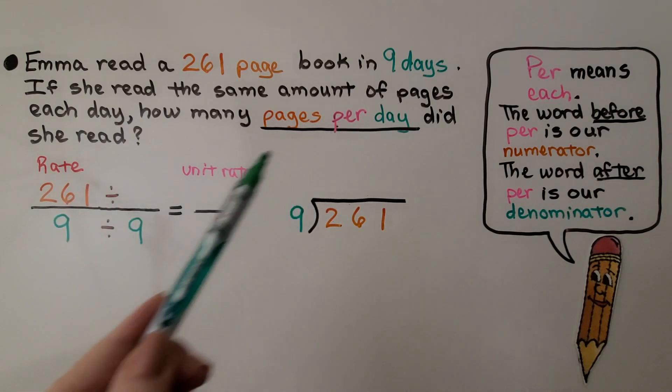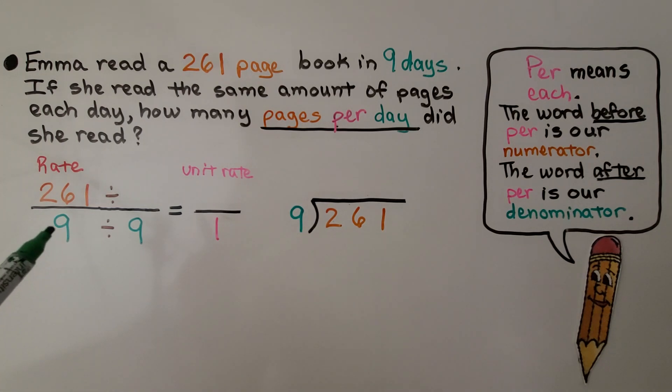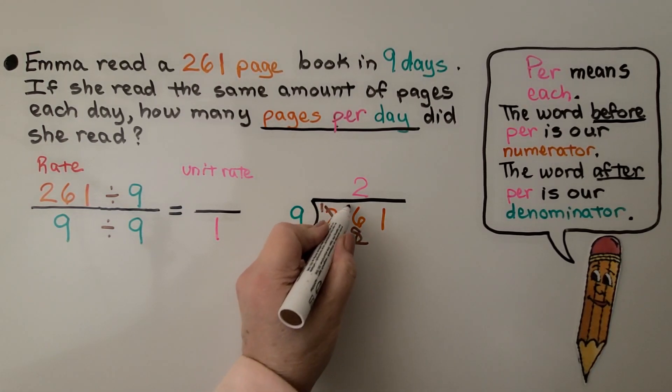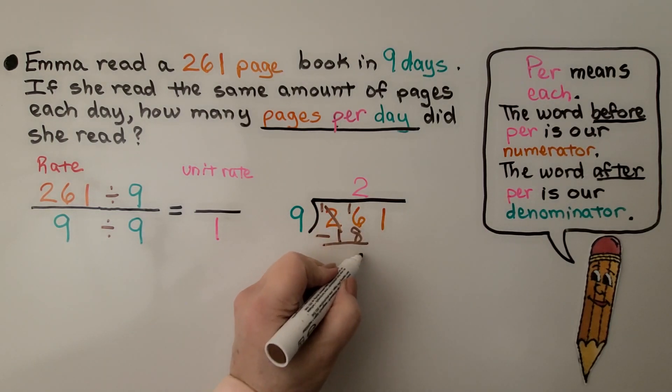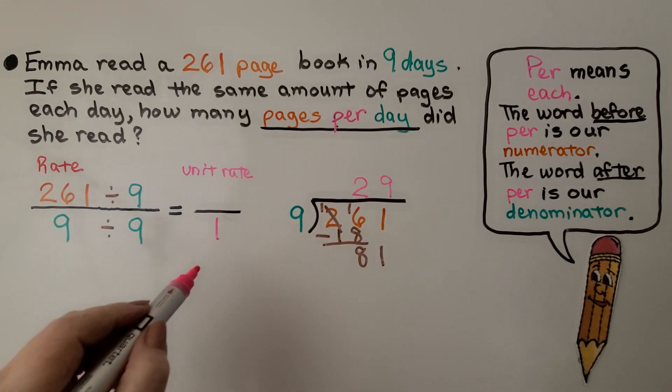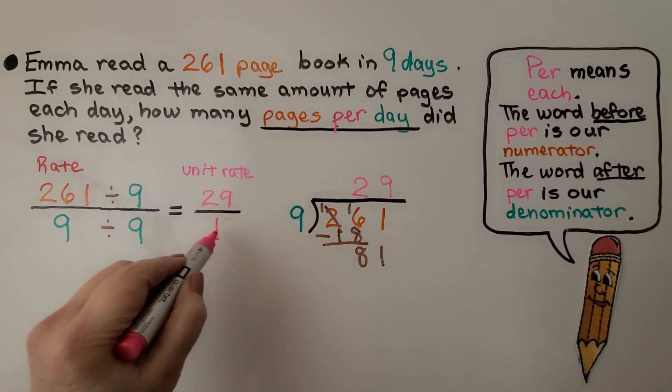To find a unit rate each day, we need a denominator of one. That tells us we need to do nine divided by nine, which means we need to do 261 divided by nine. We need to figure out how many times nine can fit into 261. Nine times three is 27, so that's too much. We'll go with a two. Nine times two is 18, so we subtract that. That becomes a one. Now we have 16 minus eight, which is eight. This one's turn to come down. Nine can fit into 81. Nine times nine is 81, so that's a nine.